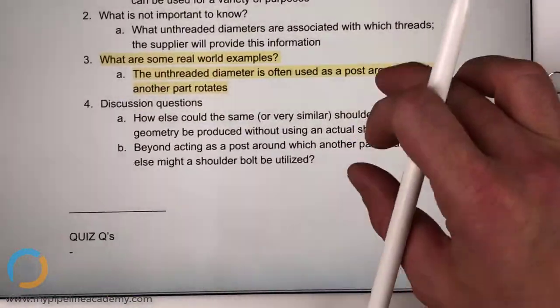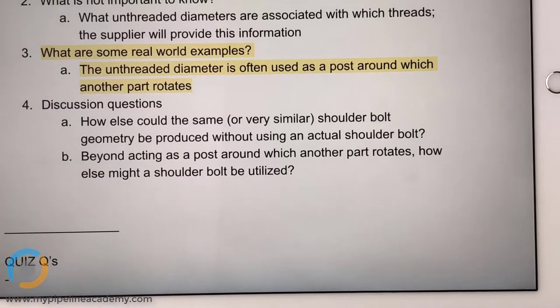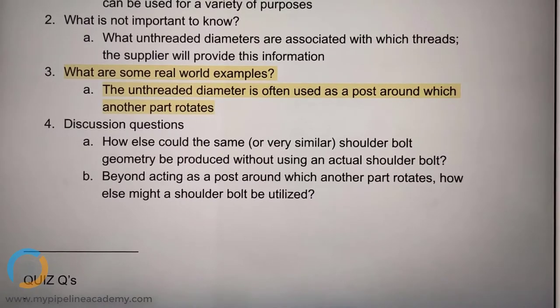What else we got here? Beyond acting as a post around which another part rotates, how else might a shoulder bolt be utilized? Just like as a nail. Like to hang some paintings on a wall, I guess. It does have a head. You can screw it on a wall. So I guess if you run out of nails, you could use one of these. Why would someone use a shoulder bolt over a nail or vice versa? I would use a nail for a regular wall. But if you run out of nails, I would use a shoulder bolt.